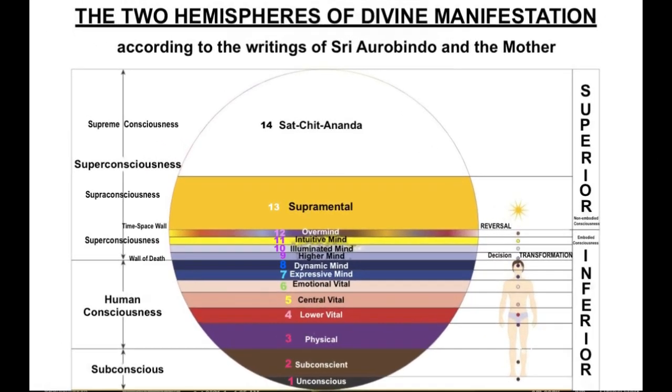Here is a visual representation of the two hemispheres of divine manifestation according to the writings of Sri Aurobindo and the mother, created by Madhu Sobe triple transformation dot ca.